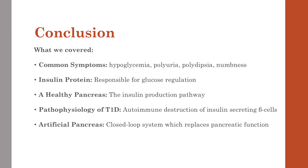We covered a few things in this lecture. In conclusion, we covered the common symptoms of hypoglycemia — polyuria, polydipsia, and sensory deprivation such as numbness or blindness. We've covered the insulin protein responsible for glucose regulation, and the healthy pancreas insulin production pathway we outlined with the picture.